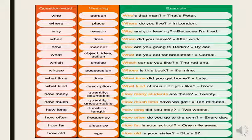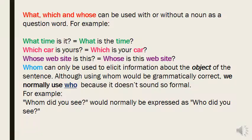HOW OLD asks about age — how old is your sister? What, which, and whose can be used with or without a noun as a question word. For example: what time is it? / what is the time? Which car is yours? / which is your car? Whose website is this? / whose is this website? Both ways are correct.